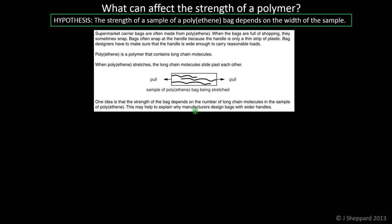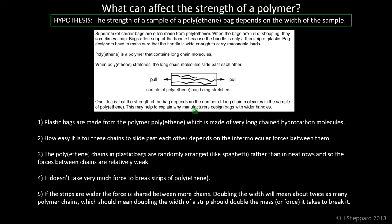If you're trying to explain the science behind this hypothesis, it's important to think about these things. The plastic bags are made from the polymer polythene, which is made of very long-chain hydrocarbon molecules. What's not in the description is the following: how easy it is for these chains to slide past each other depends on the intermolecular forces between them. Intermolecular forces are the forces between those long polymer molecules. In the plastic bag, the polymer chains are arranged randomly, like spaghetti, rather than in very neat rows, and that makes the forces between the chains relatively weak.